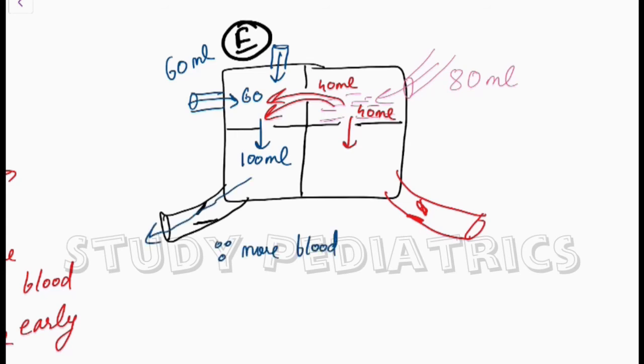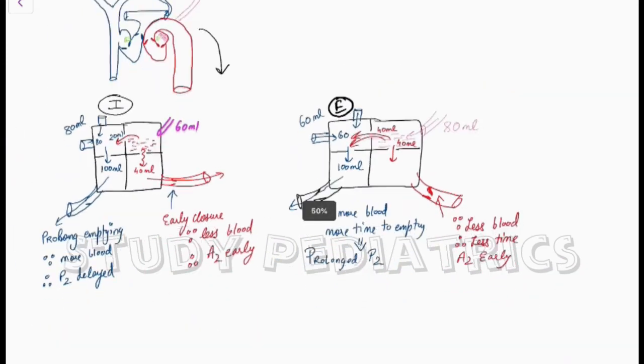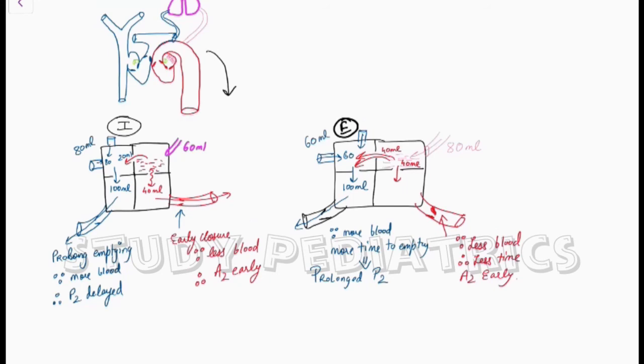Therefore, more blood, more time to empty, hence prolonged P2. And on the left side, since less blood, therefore less time to empty, therefore A2 is early. This concludes why the S2 splitting is fixed in ASD.